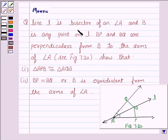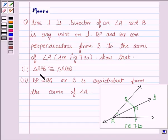Line L is the bisector of an angle A, and B is any point on L. BP and BQ are perpendiculars from B to the arms of angle A. Show that triangle APB is congruent to triangle AQB, and BP is equal to BQ, or B is equidistant from the arms of angle A.